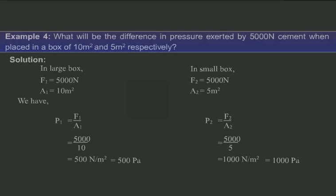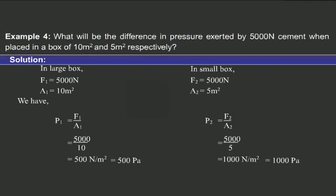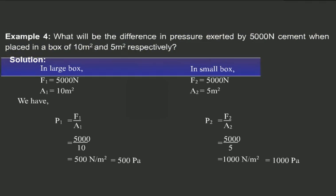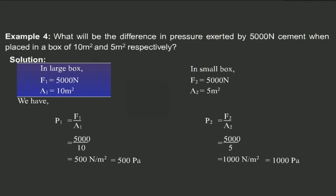Here is another example. It says: what will be the difference in pressure exerted by 5,000 Newton of cement when placed in a box of 10 meter square and 5 meter square respectively? In the large box, the force, or F1, is equal to 5,000 Newton, and the area, that is A1, is equal to 10 meter square.